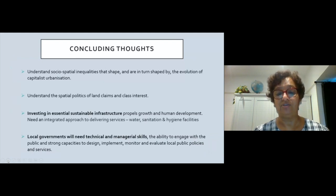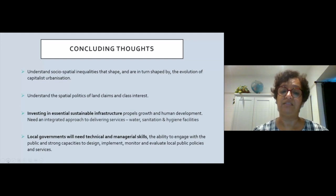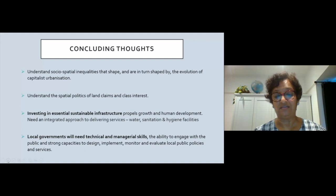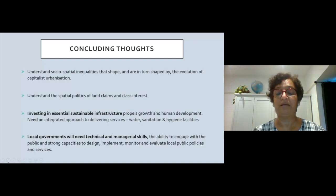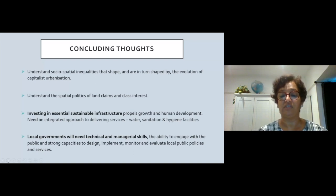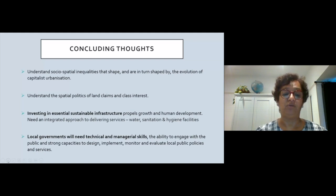To conclude: first, we need to understand the social-spatial inequalities shaped by and shaping capitalist urbanisation. Second, understand the spatial politics of land claims and class interest. Third, invest in essential sustainable infrastructure that propels growth and human development — an integrated approach to delivering water, sanitation, and hygiene services. Local governments have a big role to play, needing technical and managerial skills, ability to engage with the public, and strong capacities to design, implement, monitor, and evaluate local public policies and services.